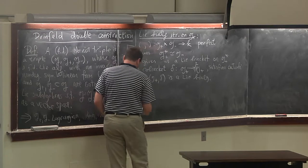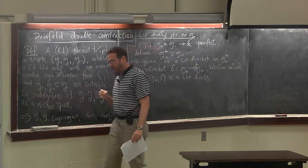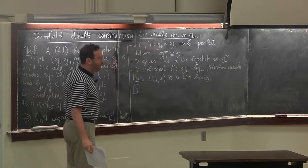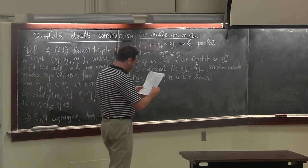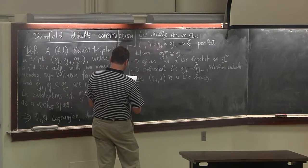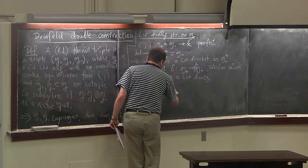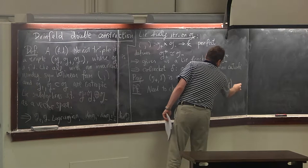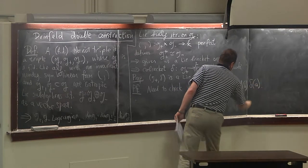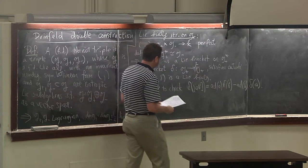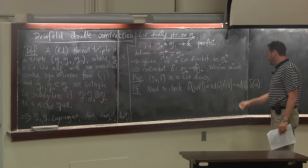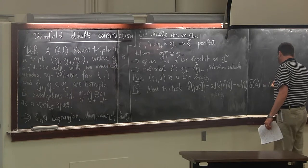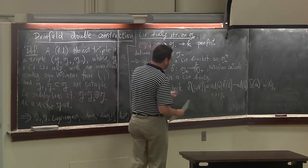Let me give a proof. This is an enjoyable calculation — not too long and not too messy. We need to check the one-cocycle condition, which I will briefly remind you. Elements A and B are in G+, and the condition is supposed to hold in wedge-two of G+. To check an identity in wedge-two of G+, let us pair it through the pairing with a tensor product of two elements F and G of G−. For any F and G in G−, I will compute the inner product of F⊗G with this expression.